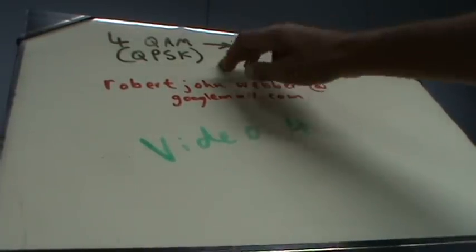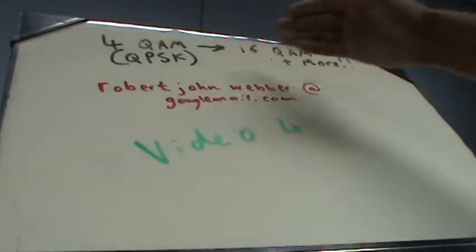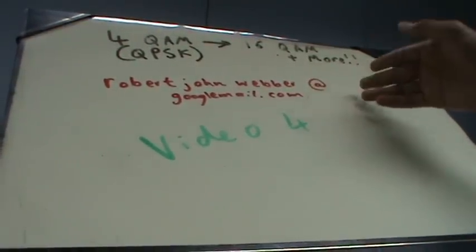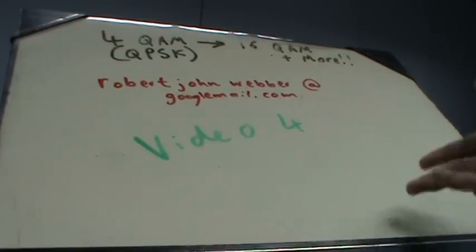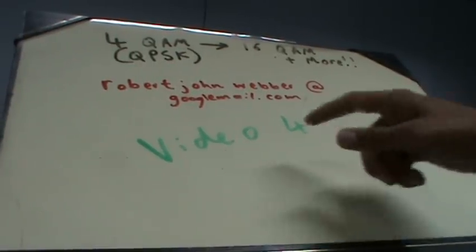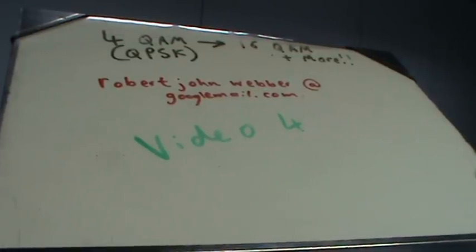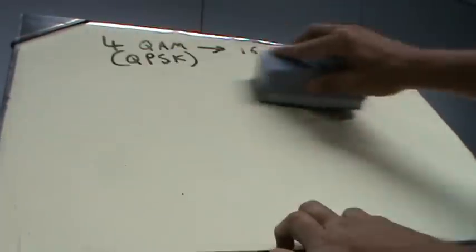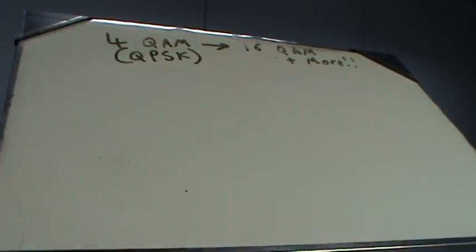Basically, how do we turn this 4 QAM, or QPSK, and turn that into a 16 QAM or 64 QAM or 256? How do we actually do this? By the way, this is video 4 in my series. Hopefully you're all enjoying it. Please give me feedback. I'm trying to do this to help you guys. I'm not doing it for money, I'm doing it for love.